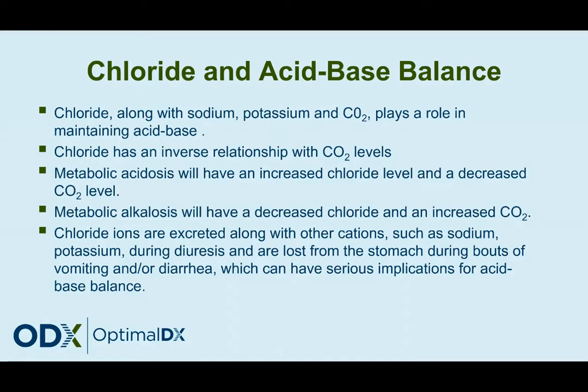In a metabolic alkalosis, you're going to have a decreased chloride and an increased CO2. Chloride ions are excreted along with other cations such as sodium and potassium during diuresis — so it's lost in the urine. Also, it's lost when we have bouts of vomiting and/or diarrhea, which can have serious implications for acid-base balance.